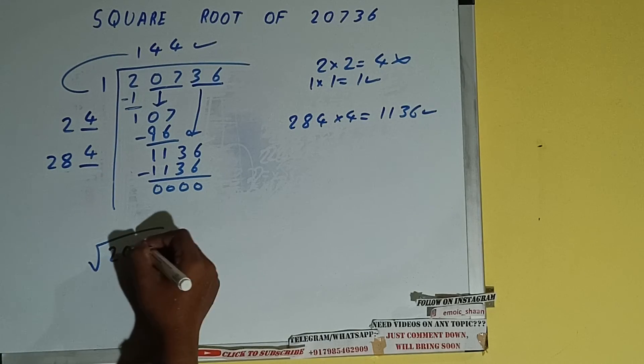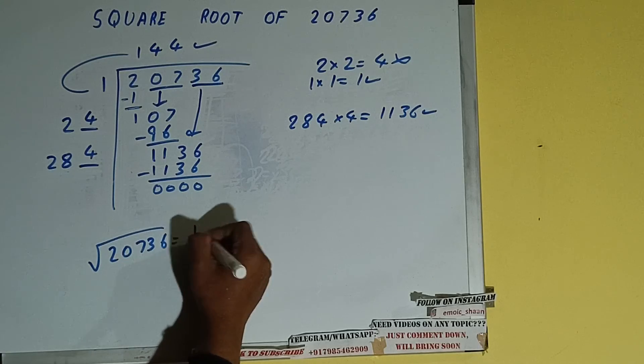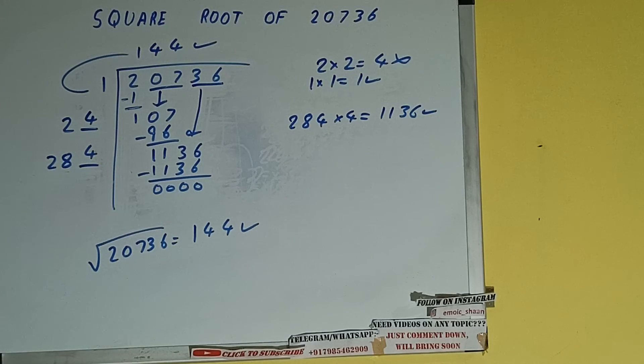So square root of 20736 will be 144. That's it. So this is all.